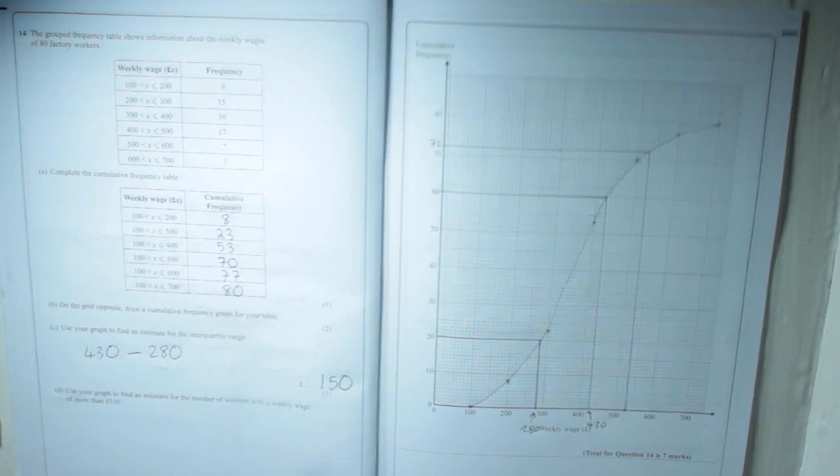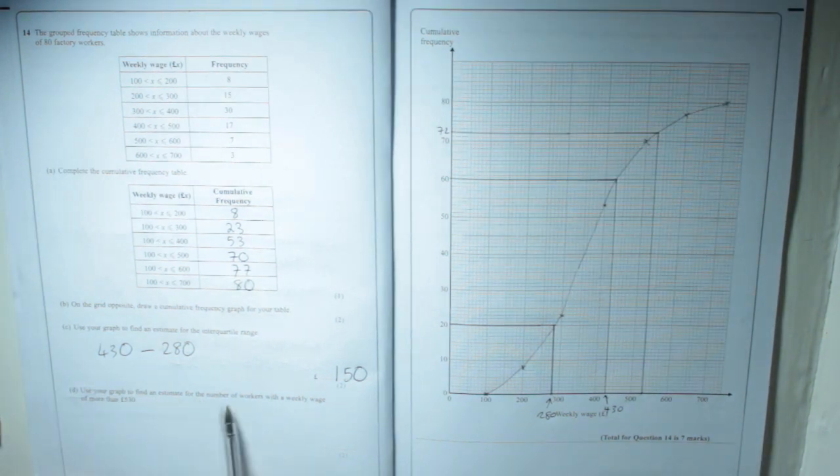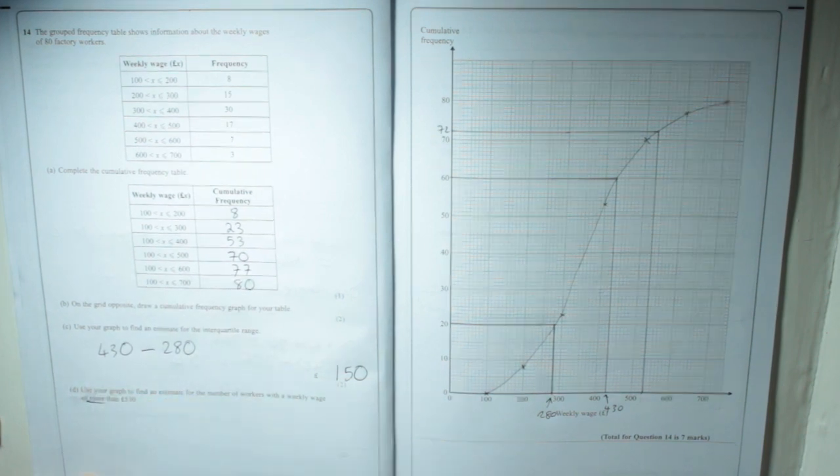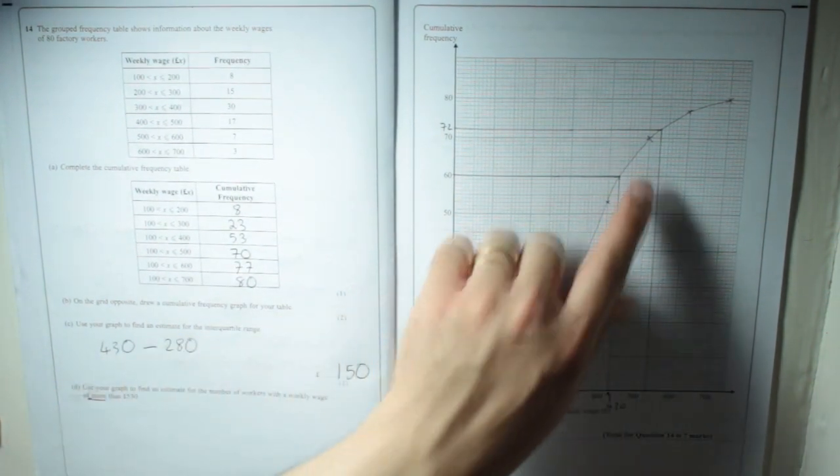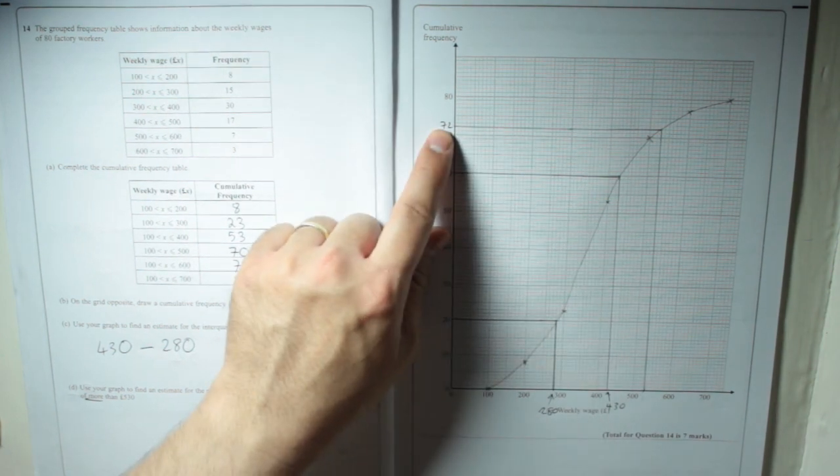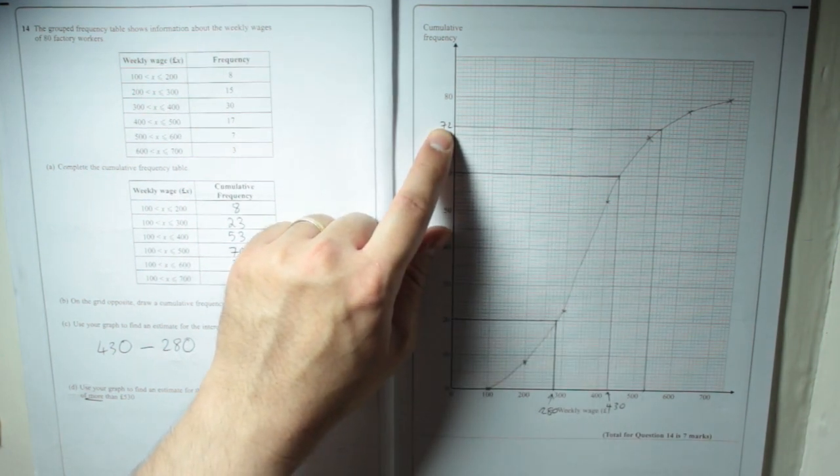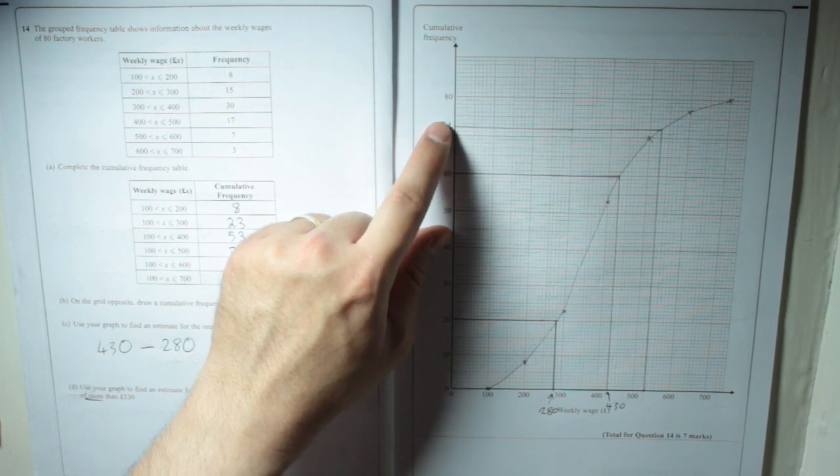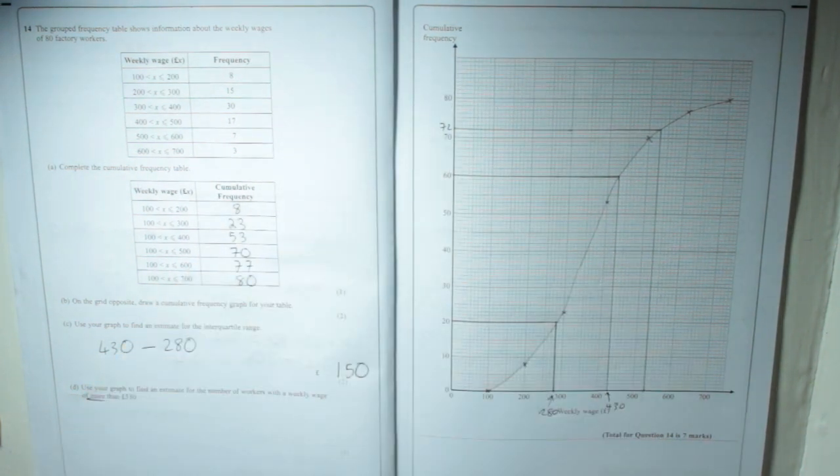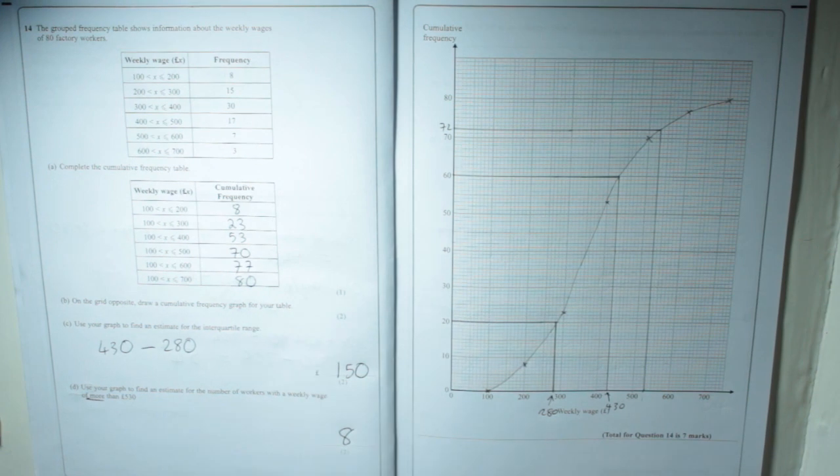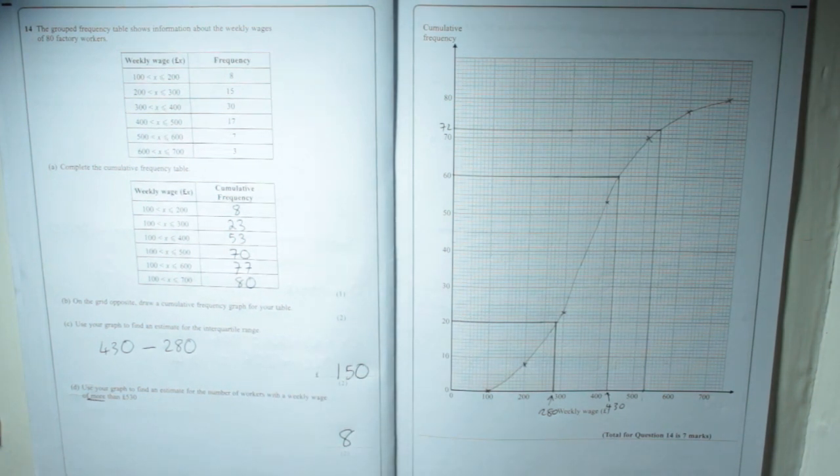OK. So, the line goes across, it hits 72. But remember, the question said, use your graph to find an estimate for the number of workers with a weekly wage of more than 530 pounds. So, if 530 pounds gets to 72, how many more get above that? Well, that's the difference between 72 and 80, which is 8. And that's that. That's cumulative frequency. Thank you.